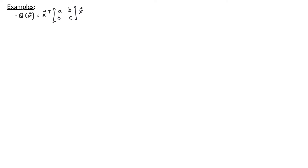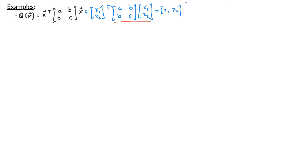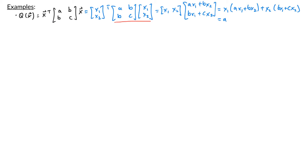Here x is the two-dimensional vector [x1, x2]. Multiplying the matrix and vector x together gives [x1, x2] times the vector [Ax1 + Bx2, Bx1 + Cx2]. Then multiplying the two vectors together and distributing, combining like terms, I get A·x1 squared plus 2B·x1x2 plus C·x2 squared. So the coefficient of the x1 squared term is the diagonal entry A, the coefficient of x2 squared is the diagonal entry C, and the cross product term has coefficient 2B, which is the sum of the off-diagonal entries.